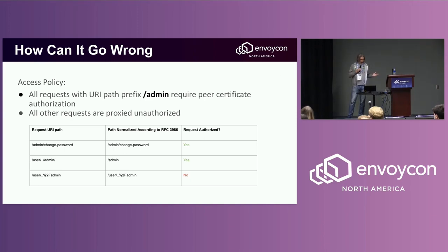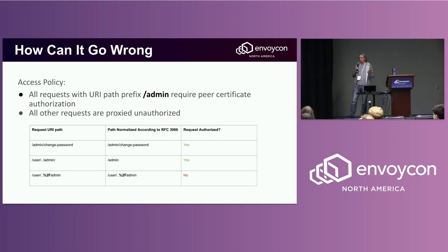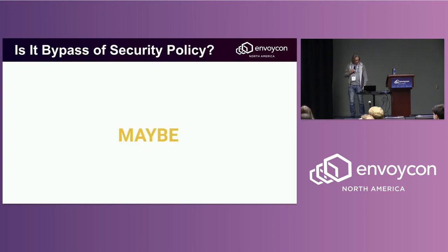So path normalization doesn't change the path at all. It doesn't match the admin prefix, and the request goes through. The interesting question: did we just create a trivial bypass of the security policy? The answer is: maybe.